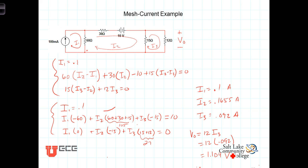We could determine any other voltage or current that we wanted to. For example, what is the current flowing down through that 60 ohm resistor? Let's call it i_60. Well, i_60 is just going to be i1 minus i2, or 0.1 minus 0.1655 amps. Of course, that then equals negative 0.0655 amps.